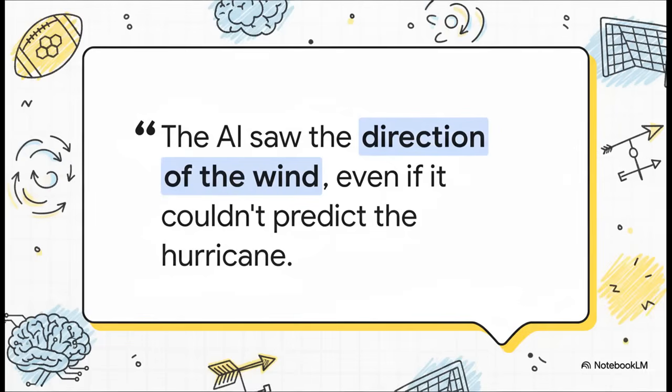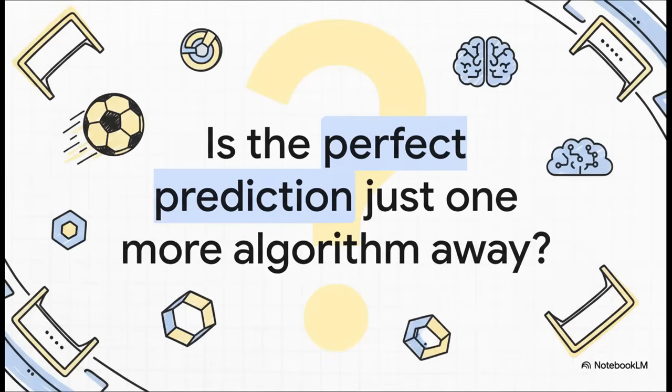You know, if I had to sum this whole experiment up, it would be with this idea. The AI correctly saw which way the wind was blowing in both matches. It got the fundamental dynamics. It knew the key players. And it understood the most likely flow of the game. Now, it couldn't quite predict the full force of that Aston Villa hurricane, but it knew, without a doubt, which way the storm was heading. Which, of course, leaves us with one last massive question.